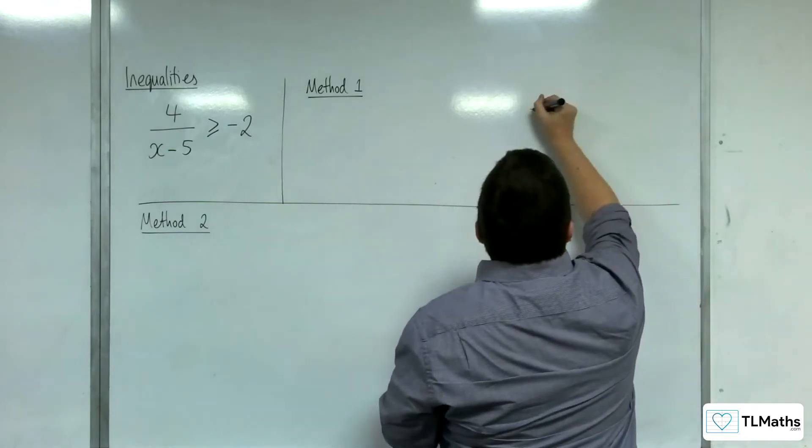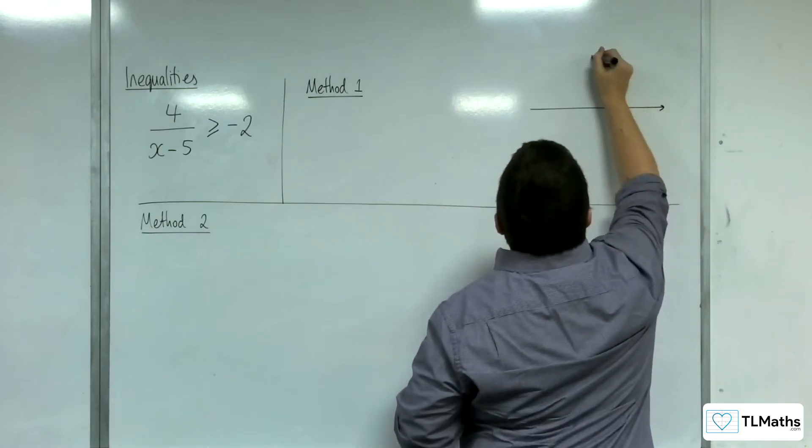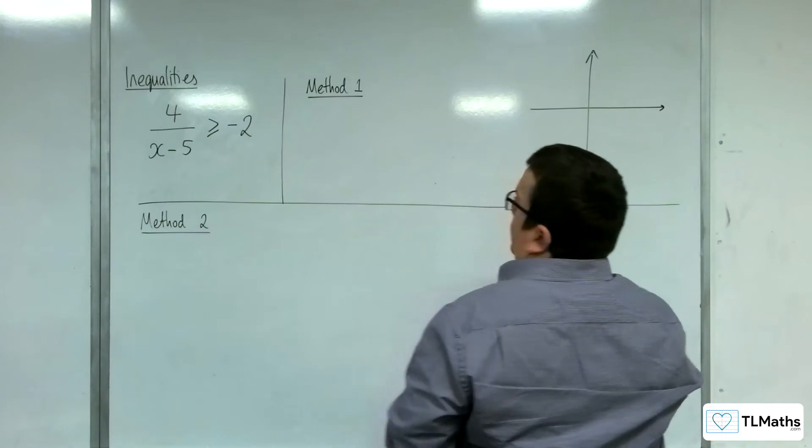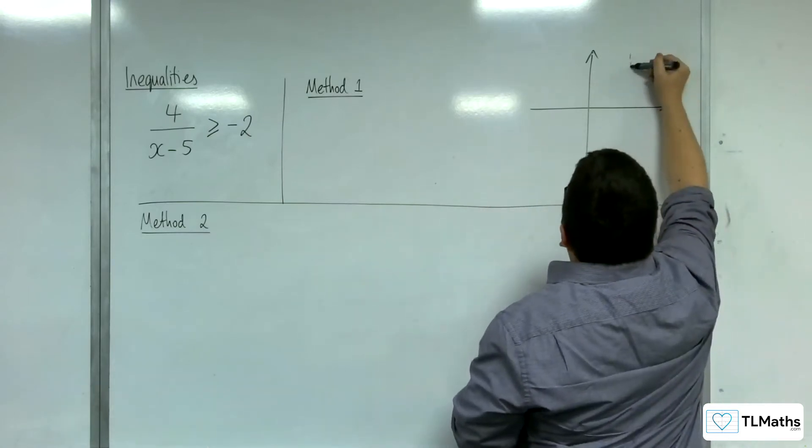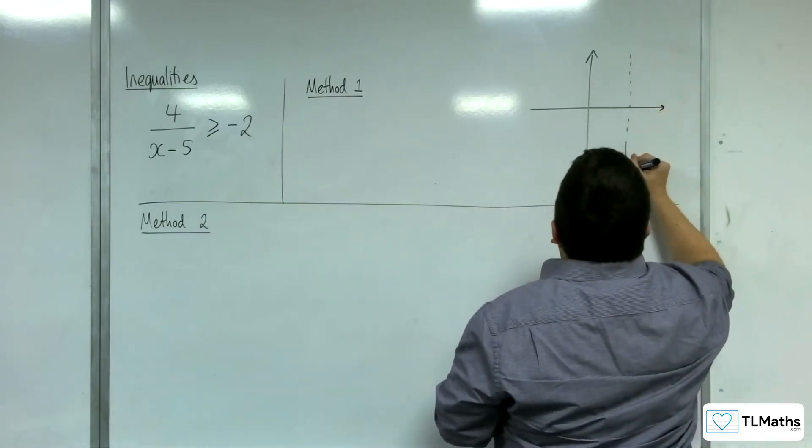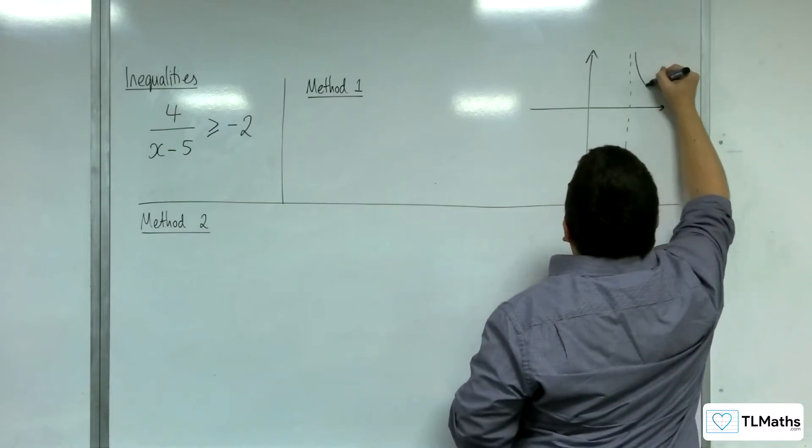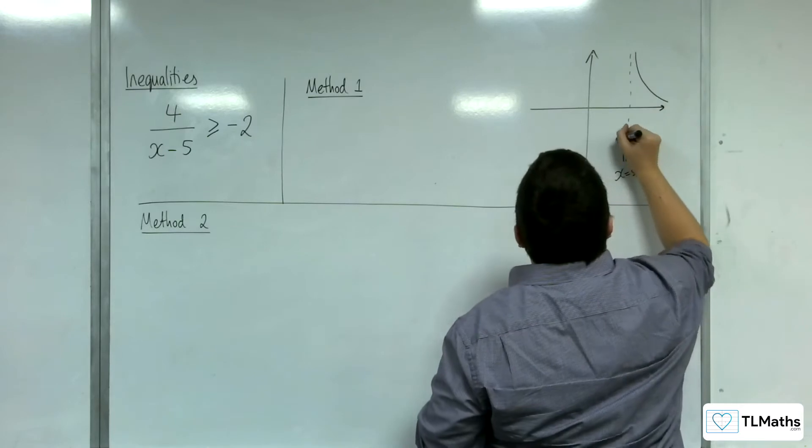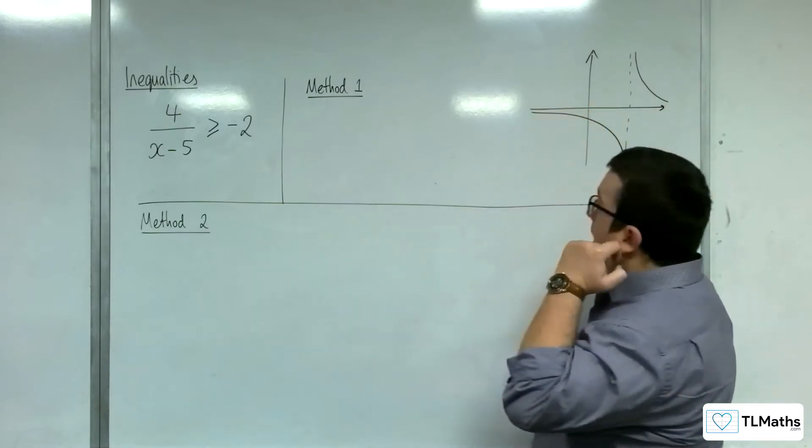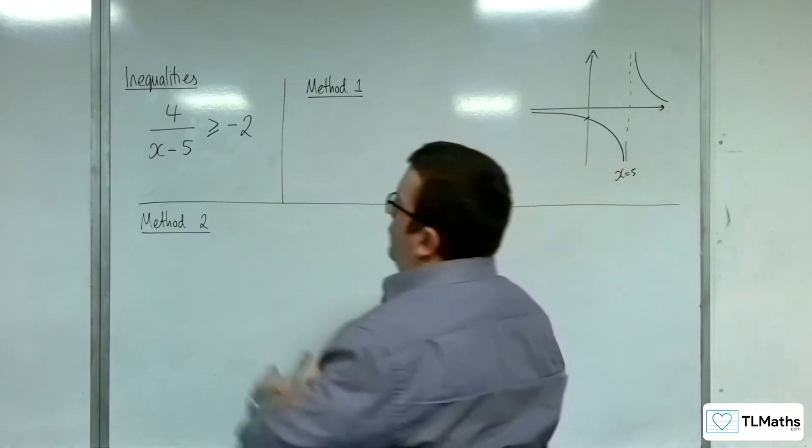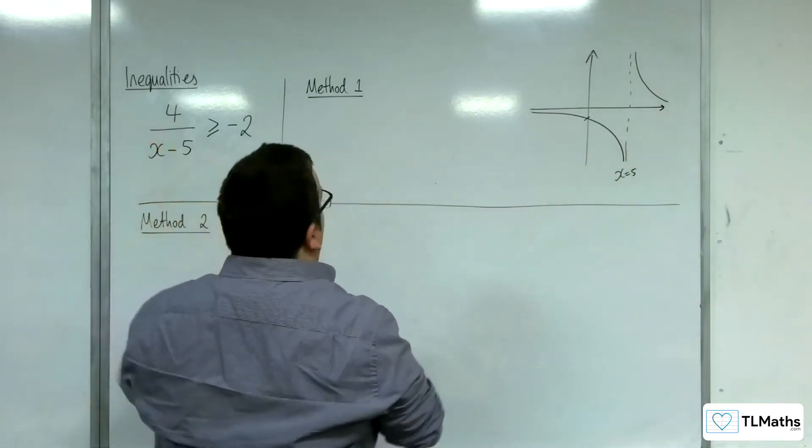So first thing I would want to do for method one is I am going to sketch the graph. So this will have a vertical asymptote at x equals 5, and it's going to look something like this. And it's going to be crossing through the y-axis when x is 0. So that's minus 4 fifths.